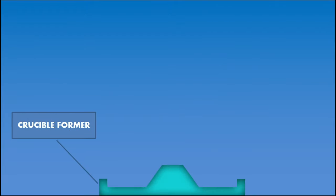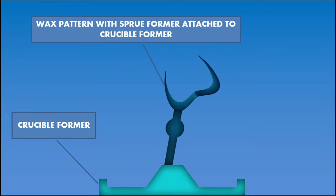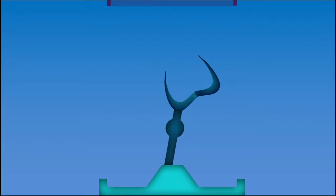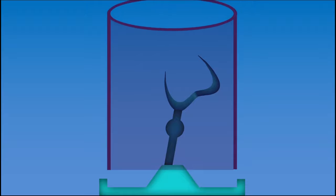Let's now prepare for the casting procedure. A crucible former, which is often made of a flexible material, is placed on the bottom. The wax pattern with the attached sprue former is fixed to the crucible former. We are seeing the wax pattern in cross section for better understanding. Next step is to place the casting ring, which is usually made of metal, with one end contacting the crucible former and the other end open.